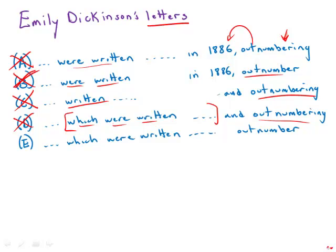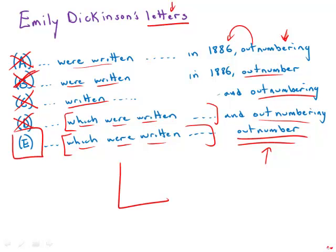What we have in E is we have the subordinate clause again, that's perfectly fine, has the verb inside of it. And now we get a bona fide verb. So this is the subject and this is the verb. The letters outnumber. That makes perfect sense, and E is by far the best answer choice. Miss Emily Dickinson would be proud.